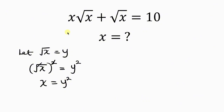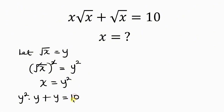Now let's go back to the given expression. x is y squared, and the square root of x is y. So substituting, we get y squared times y plus y, which gives y cubed plus y, and this is equal to 10.